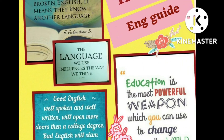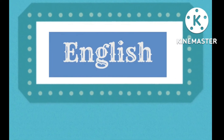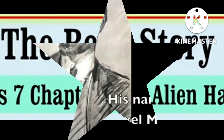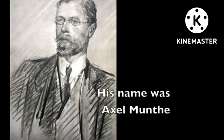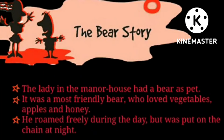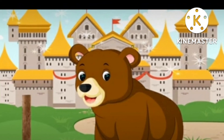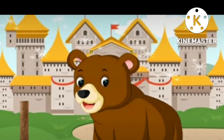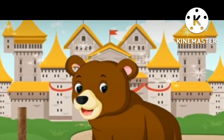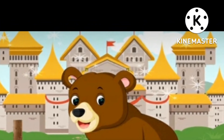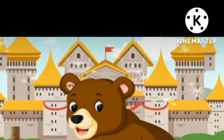Hello students, welcome to your English class and your reader lesson — 'The Bear Story.' It is written by a Swedish doctor and writer. This chapter tells us the story of a loyal bear, who was a pet of a lady who lived in the old manor house. He was an obedient and amicable pet. Amicable means very friendly. Manor houses are the big, palatial countryside houses with lands around them.